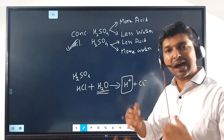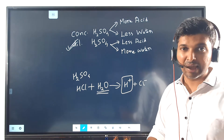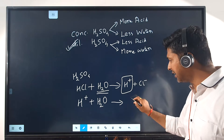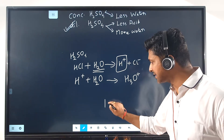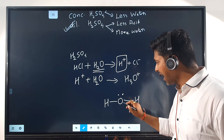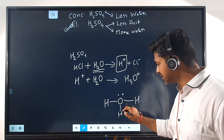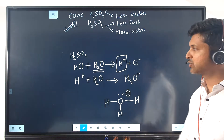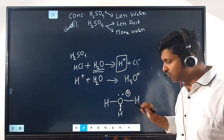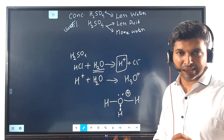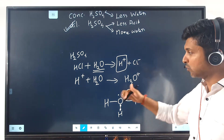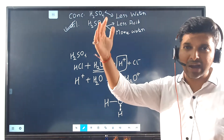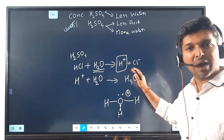So as much water as you add, the more dissociation of H+ ions increases, and the more H+ ions there are, the greater the acidity. The H+ combines with H2O to form H3O+ through a coordinate bond, because both electrons are donated by the oxygen. Water has a high dielectric constant, which promotes dissociation in its presence.